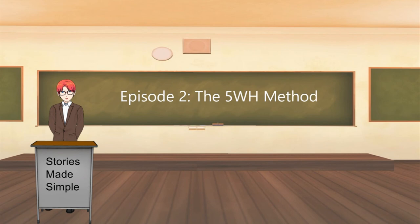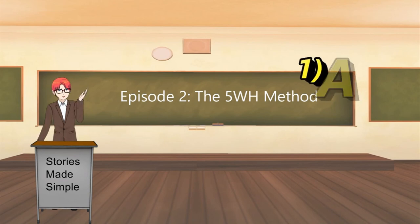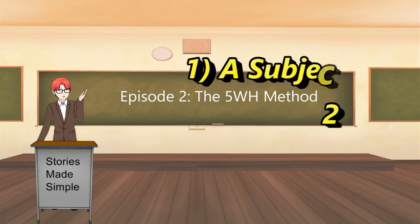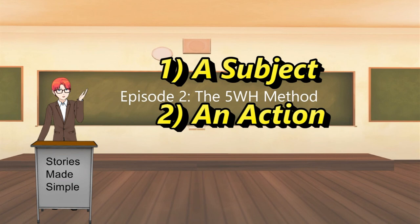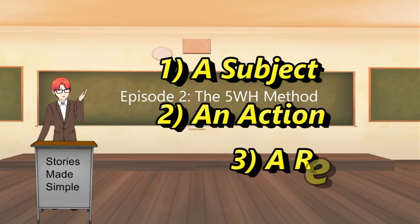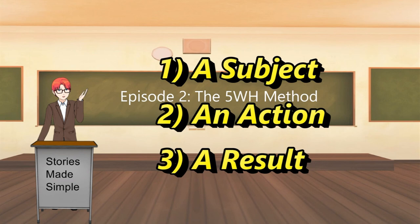In the previous episode, we talked about what stories are and how they're ways to share our knowledge and our experiences with others, and how each story has three basic components. A subject, which is going to be a person or thing, also known as a noun. An action, which is something that happens to that person or thing — action words in English are also called verbs. And a result, which is what happens after that action is over. Of course, if you just have a character, an action, and a result, that's pretty simple and maybe even a bit boring, so we have to spice it up a little bit more with details.